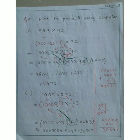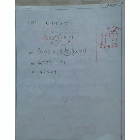Next example: 1009 × 283. We break 1009 as 1000 + 9. So it becomes (1000 × 283) + (9 × 283) = 283,000 + 2,547. After addition, we get 285,547.